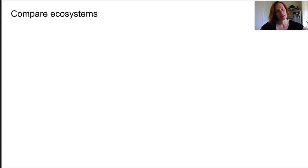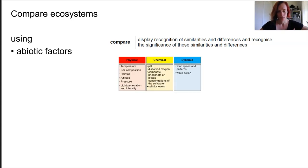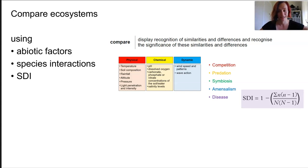This dot point asks us to compare ecosystems using QCAA's definition of compare, which is to find similarities, differences, and significance. We are using abiotic factors, species interactions, and Simpson's diversity index.